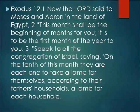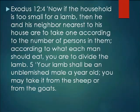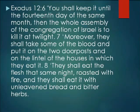Exodus chapter 12: 'The Lord said to Moses and Aaron in the land of Egypt, this month shall be the beginning of months for you — it is to be the first month of the year. Speak to all the congregation of Israel: on the 10th of this month, they are each to take a lamb for themselves according to their father's households — a lamb for each household. If the household is too small for a lamb, the nearest neighbor may share one according to the number of persons. Your lamb shall be an unblemished male, a year old — from the sheep or from the goats. Keep it until the 14th day of the month, then the whole assembly shall kill it at twilight, and they shall take some of the blood and put it on the two doorposts and on the lintel of the houses in which they eat it.'